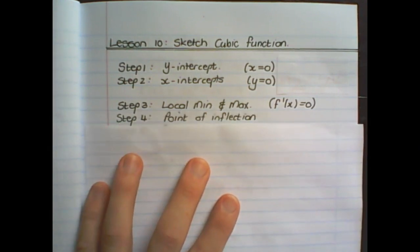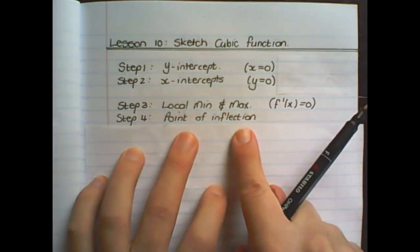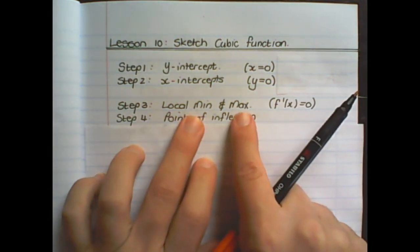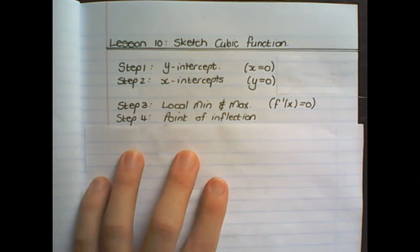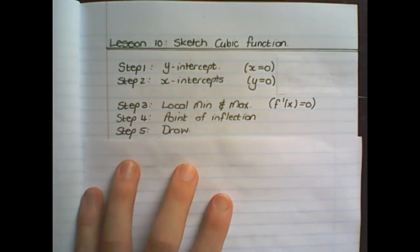Step four is to find the point of inflection, which is the point in the middle of the local minimum and maximum. Step five is to simply plot and draw the function.